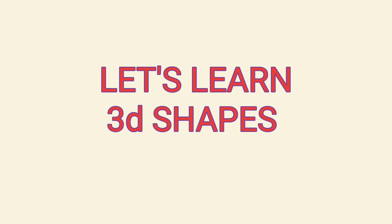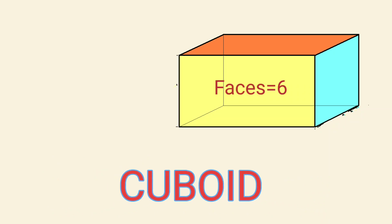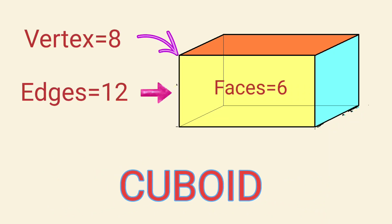Let's learn 3D shapes. Cuboid: A cuboid has six rectangular faces, eight vertices, and 12 edges.